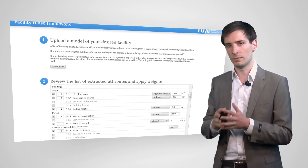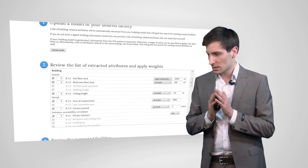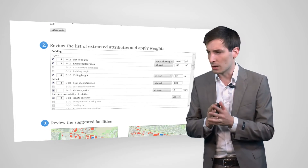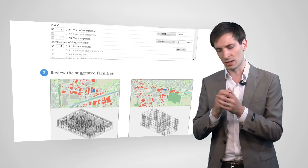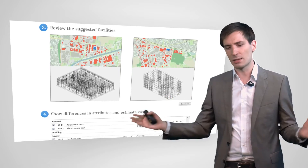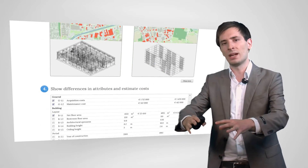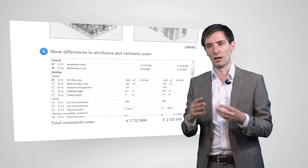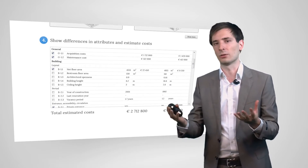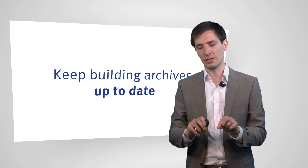Secondly, we proposed a system to recommend vacant facilities to aspiring owners based on a combined metric of refurbishing and acquiring costs. We did this by combining BIM metrics and GIS metrics — geographic and demographic information. But then the question arises: if you have these archives, how do you actually keep them up to date?